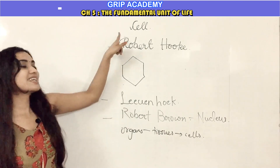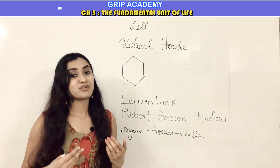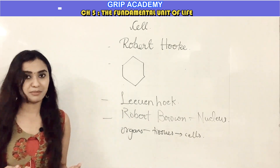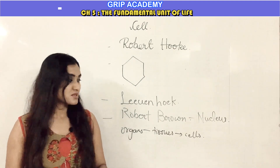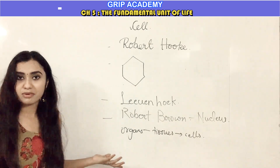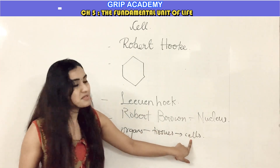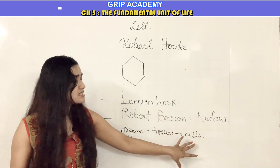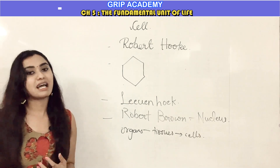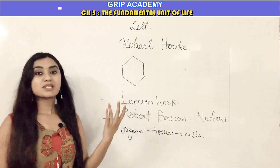Now, why is cell called the fundamental unit of life? It's because all living organisms — whether unicellular or multicellular — are made up of cells. In multicellular organisms, the body is made up of organ systems, which comprise organs, which are made up of tissues, and tissues in turn are made up of cells. These cells are responsible for carrying out all the functions necessary to keep the body alive.